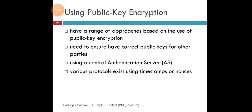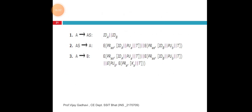Sometimes we use public key encryption. It has a range of approaches based on the use of public key encryption. It must ensure you have the correct public key for the other party. It uses a central authentication server — shortly called AS. Various protocols exist using timestamps or nonces. Here is the example of the algorithm and the steps for how to authenticate your data.